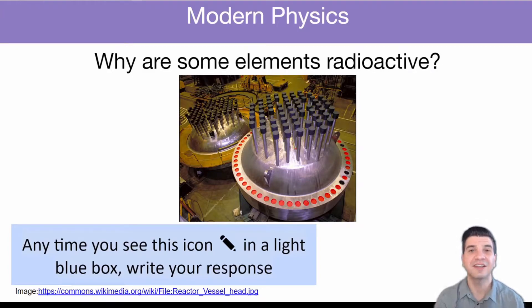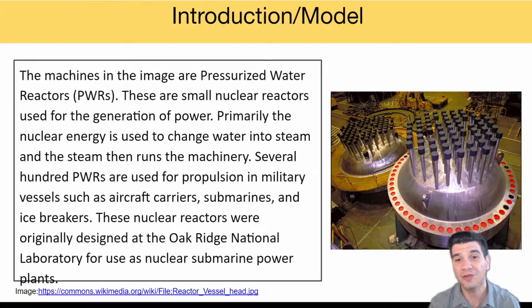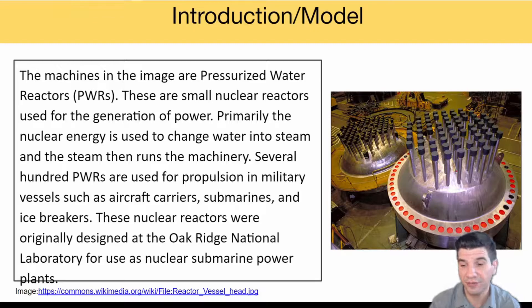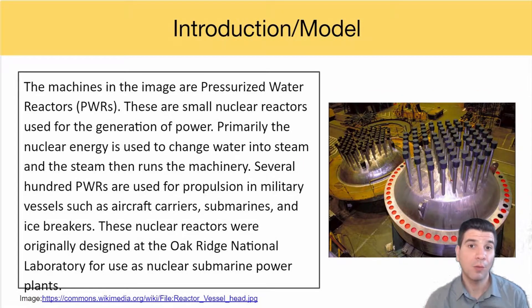Hi, this is Mr. Campania. Today we're going to be talking about some of the processes that occur that cause one element to change into another. In the image here we see some pressurized water reactors. These are small nuclear reactors used for power generation. Generally we find them on large military vehicles such as aircraft carriers and submarines. This is just one application of nuclear energy, but why are those materials radioactive in the first place?